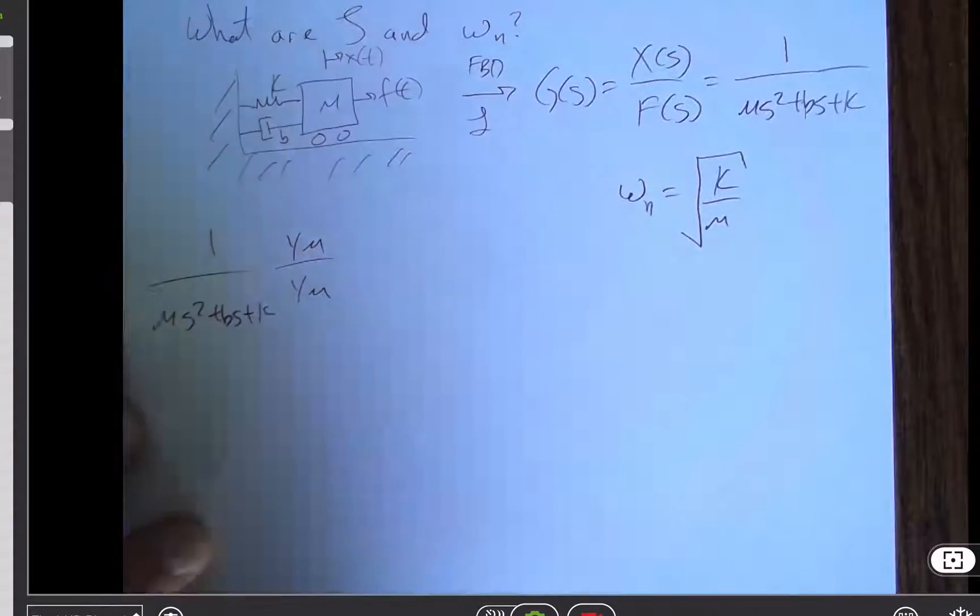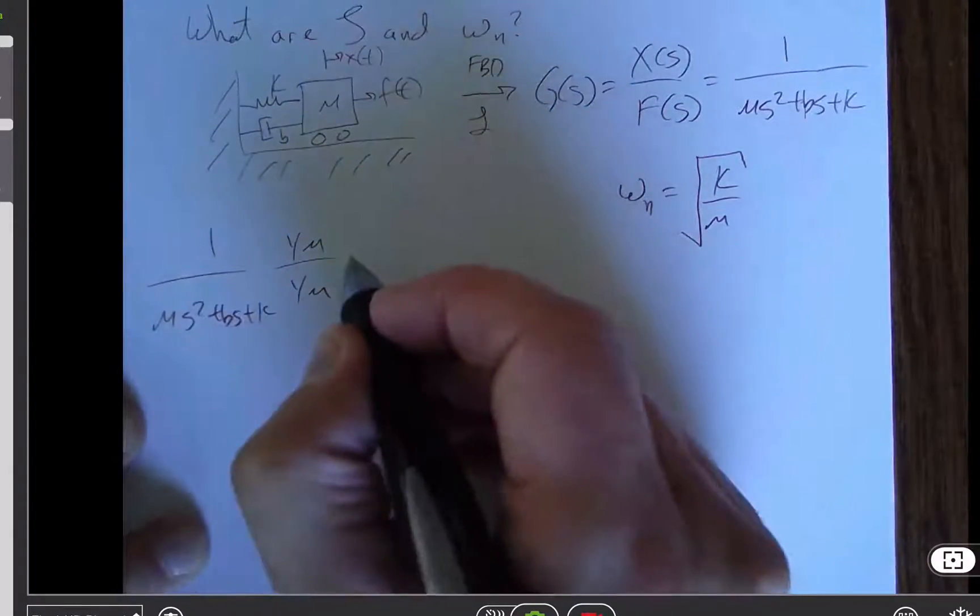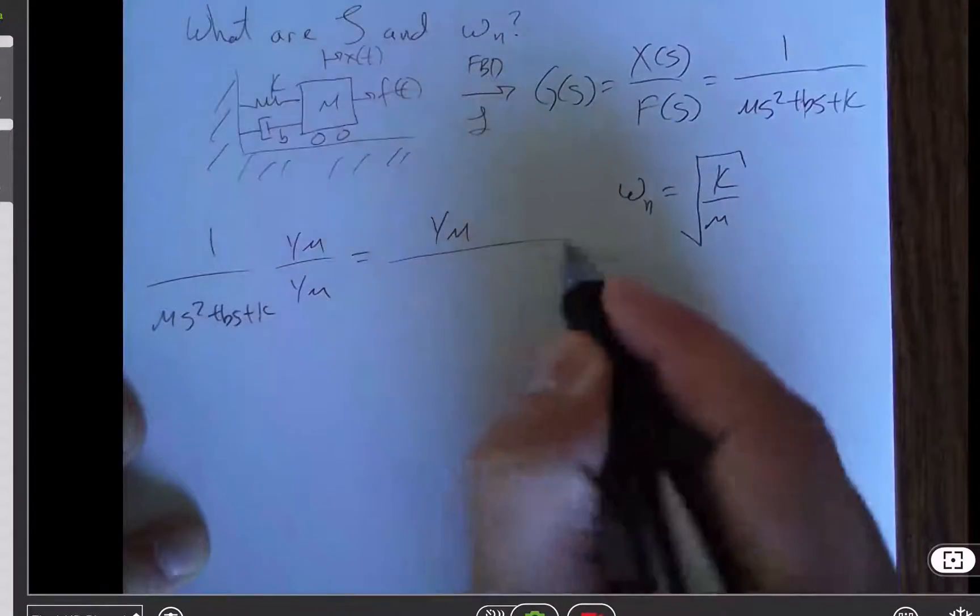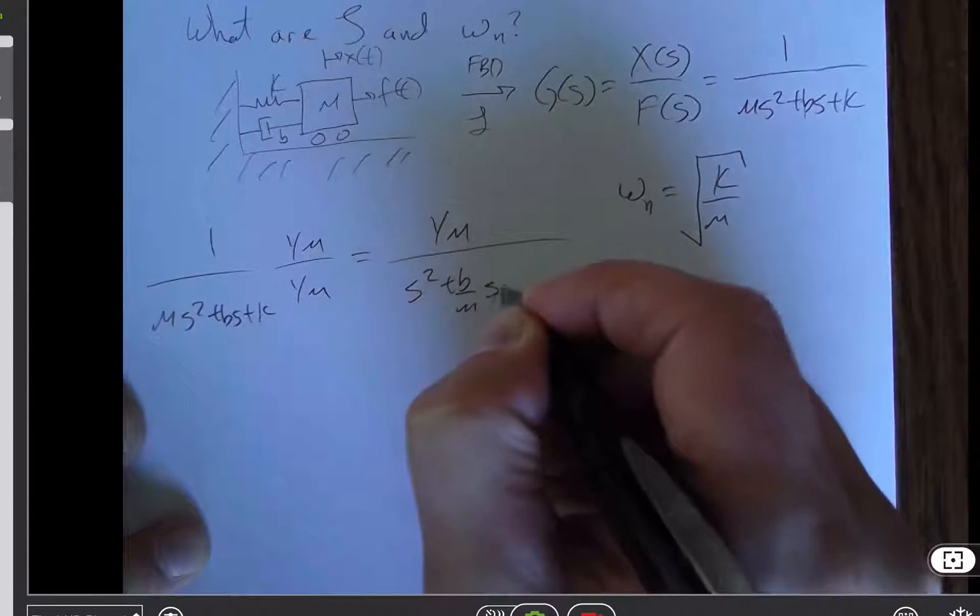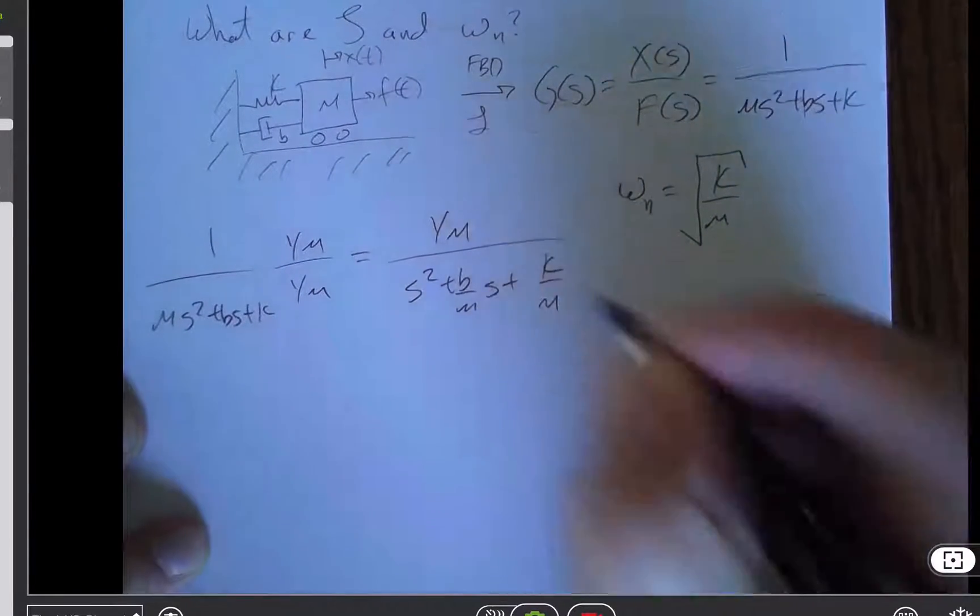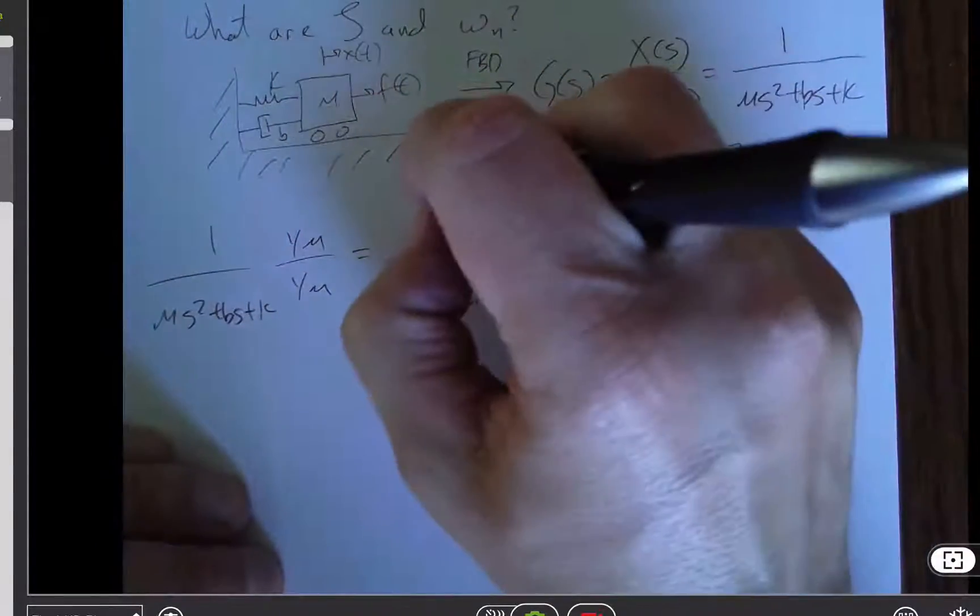basically we're trying to get at what are zeta and omega n. So if I did that, I end up with 1 over m in my numerator and then s squared plus b over ms plus k over m, which might not look a ton better.